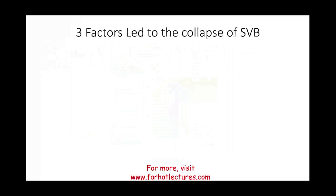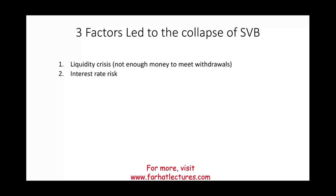What led to the Silicon Valley collapse? Three factors. First, a liquidity crisis — they did not have enough money, which is how any bank would collapse. Second, interest rate risk: interest rates went up, and as a result the bond holdings at Silicon Valley Bank went down, creating losses.